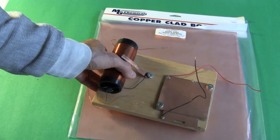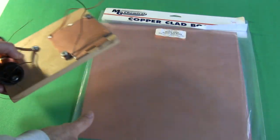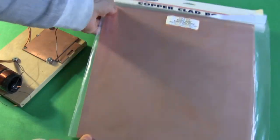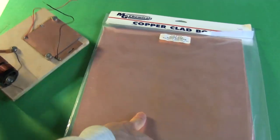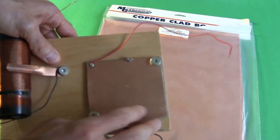For the variable capacitor for this crystal radio, I used copper cladding. Copper cladding you can get from places like Radio Shack or other electronic stores. This one is double sided.